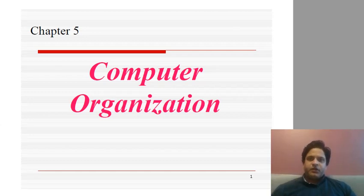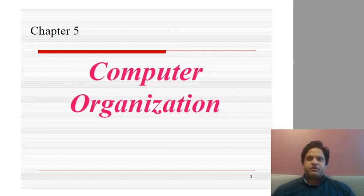Welcome to another lecture of Foundations of Computer Science. We are going to start Chapter 5 today, which is about computer organization. We will study how different components of a computer are organized, what those components are called, what their sub-components are, how interaction between all components takes place, and how a computer executes instructions. We'll start with the basics and then go into deep detail.